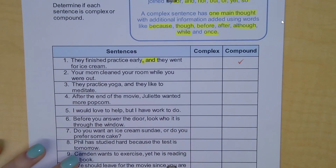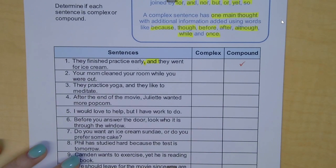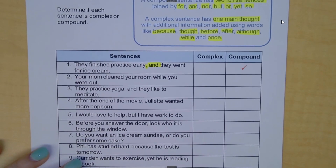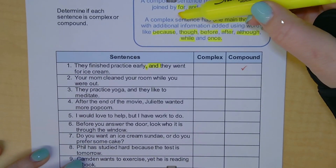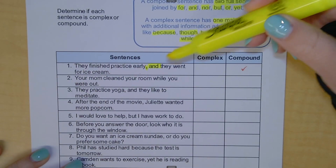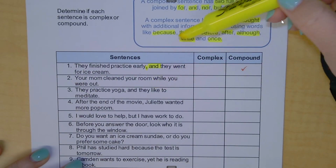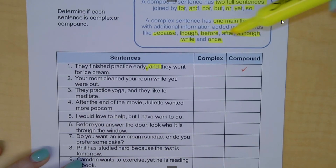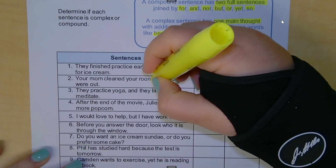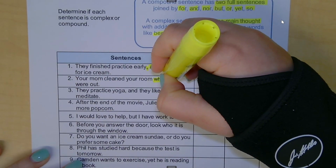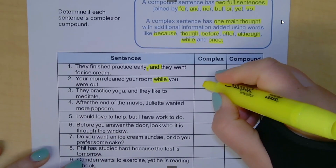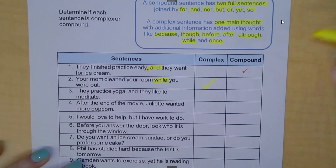Number two: 'Your mom cleaned your room while you were out.' I don't see a comma and a FANBOY, so let's look at the subordinating conjunctions list. 'While' — while is our clue word, so this is a complex sentence.